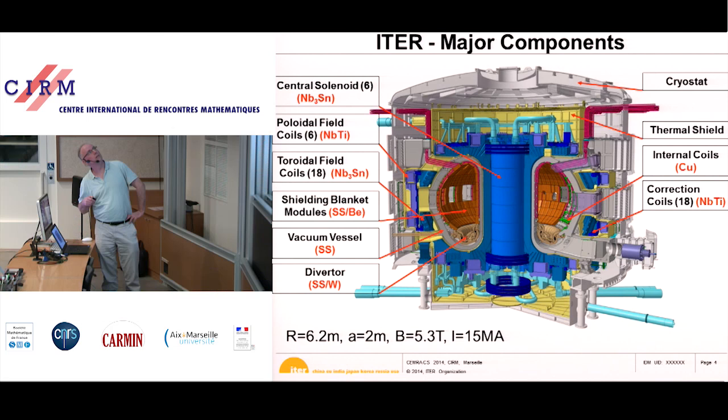This is the ITER machine. The tokamak itself is here — the vacuum vessel — inside which is a vacuum, and the plasma will be contained.